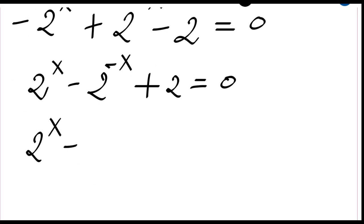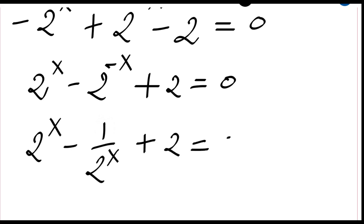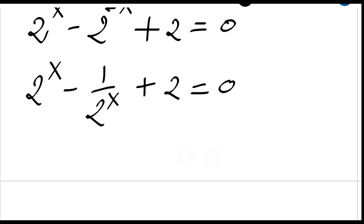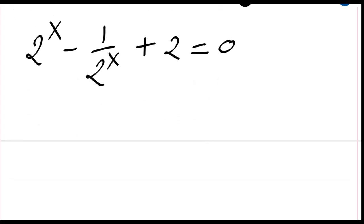Let me rewrite 2 to the power minus x as one divided by 2 to the power x, plus two equal to zero. Now if I multiply all my equation with 2 to the power x, I will just have 2 to the power...